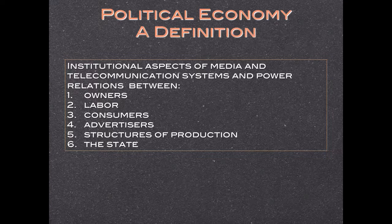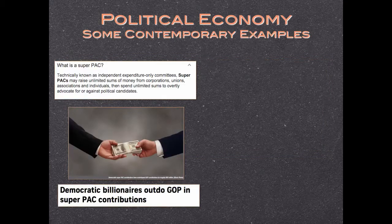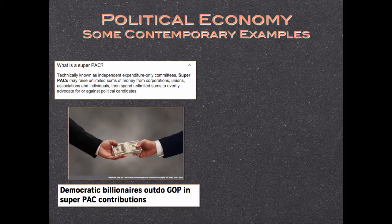Similar to cultural and media imperialism, political economy is a theory heavily based on Marxism and explores the ways political interests operate. Some contemporary examples include the partisan funding from super PACs. Super PACs are committees — PACs stands for political action committees — that can raise unlimited amounts of money from corporations, unions, and various associations, and then use the money to overtly advocate for or against a candidate. Depending on the candidate, different donors will be interested in giving money and expect in return the creation of policy that supports their agenda.